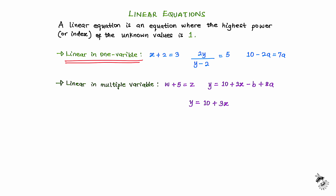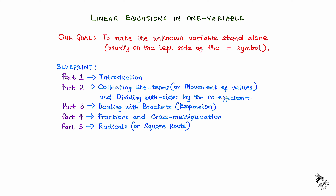Once we learn how to deal with an equation that is linear in one variable, we can apply the same knowledge to equations that are linear in multiple variables. The calculation of the unknown value in a linear equation in one variable can be summarized into one particular goal: to make the unknown variable stand alone, usually on the left side of the equation symbol. For beginners, we stick with making the unknown variable stand alone on the left side.